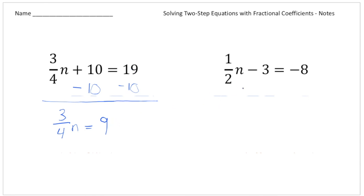And then over here, the opposite of taking away 3 is adding 3. So I'm going to add 3 to both sides. And we end up with 1 half times a number equals, well, negative 8 plus 3 gives us negative 5. All right? So we're halfway there.